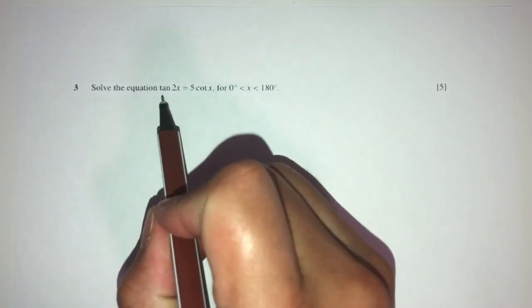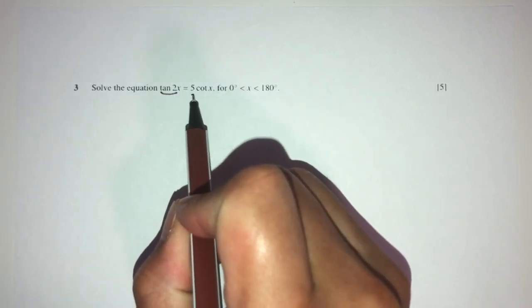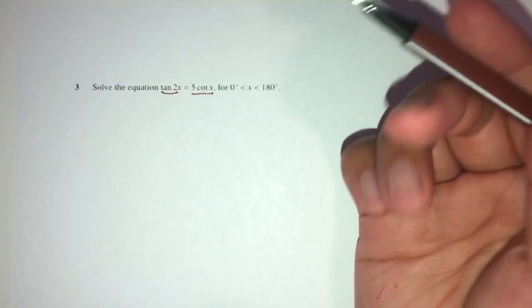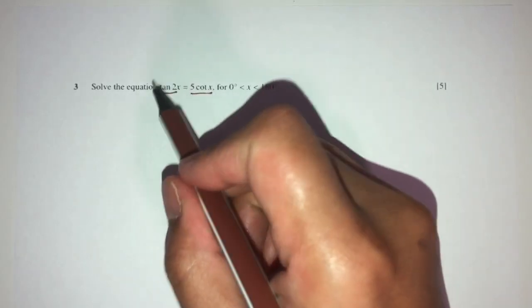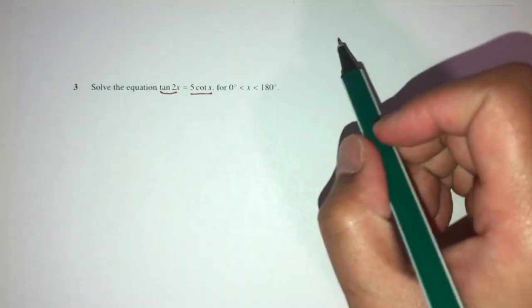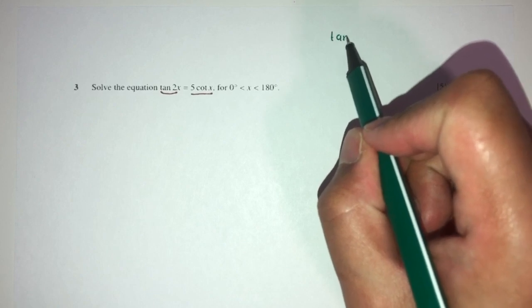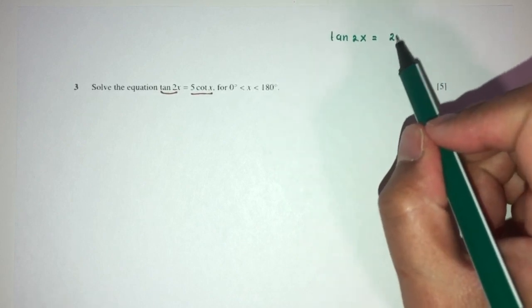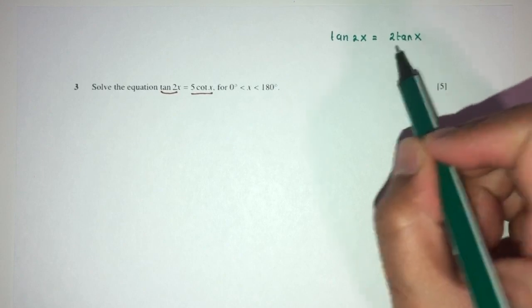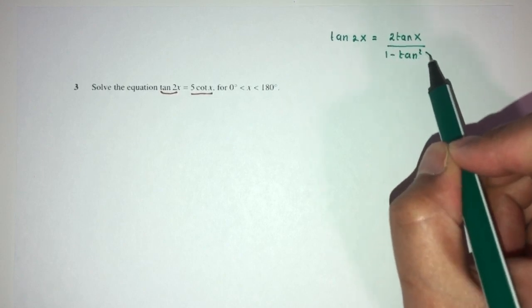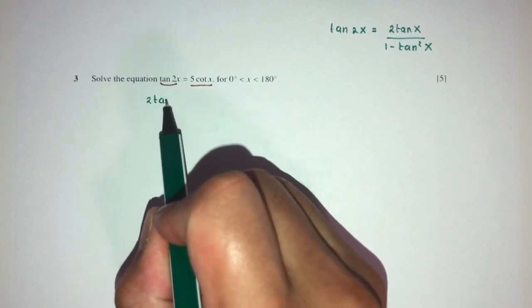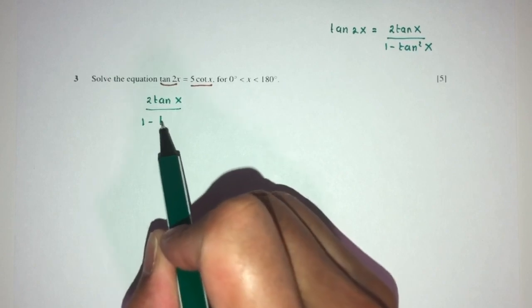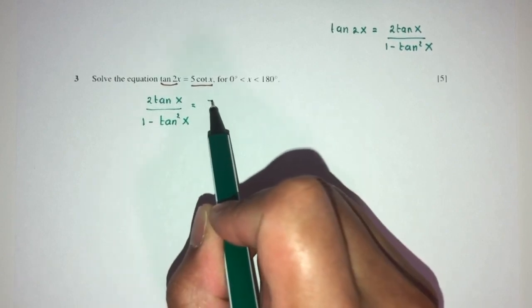Now let's move on to question number 3. We have to solve tan(2x) = 5cot(x). We notice we have 2x on one side and x on the other, so we must convert tan(2x) using the double angle formula: tan(2x) = 2tan(x) / (1 − tan²x). So we get 2tan(x) / (1 − tan²x) = 5/tan(x).